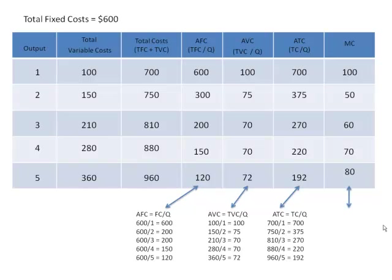The marginal cost is the change in the variable cost — it's also the change in the total cost. Now that's the way these numbers are calculated in the tables. Your textbooks typically will have a much more complete table, but I would urge you to go through those tables, go through any exercises on them, and be ready to calculate the changes or the data that goes into each of the cells of that table.